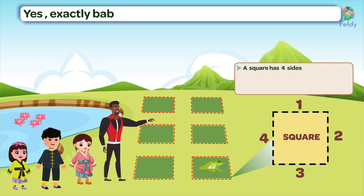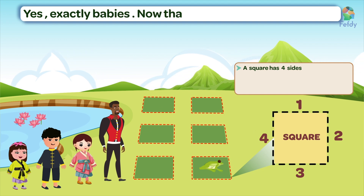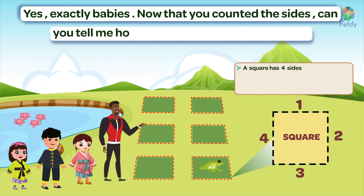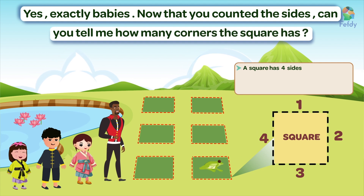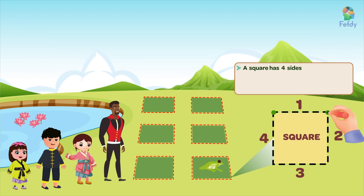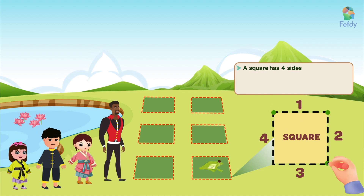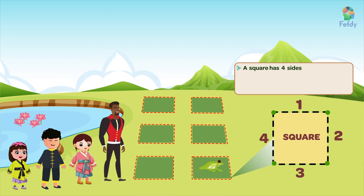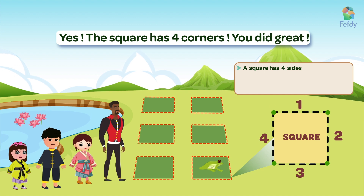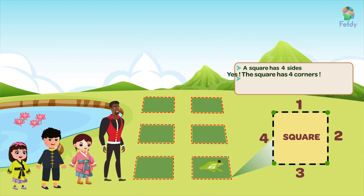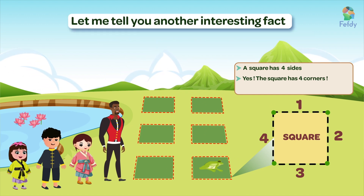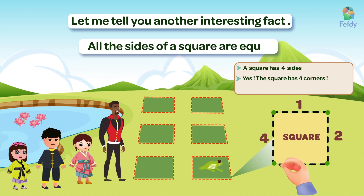Yes, exactly! Now that you've counted the sides, can you tell me how many corners the square has? Let's count together. One, two, three, four. Yes, the square has four corners. You did great! Let me tell you another interesting fact: all the sides of a square are equal.